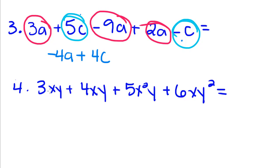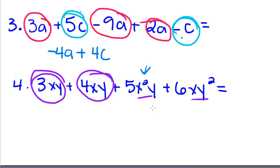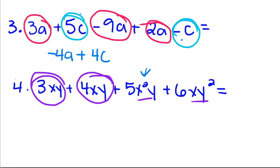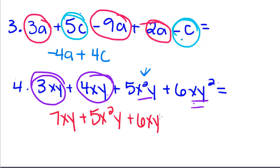This one is a little more difficult because we have terms that have a squared in them. We're going to look for all the similar terms. We have 3xy, 4xy, and then x squared y, y, and xy squared. This term with x squared y is not similar to the others, and xy squared is not similar either. So we add 3xy and 4xy to get 7xy, and then we just recopy the second part because we don't have any terms similar to those.